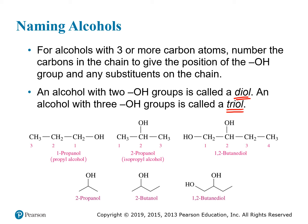Some examples: 1-propanol has a propane chain with the OH group attached to the first carbon — the one closest to the hydroxyl substituent. If the hydroxyl group were on the other side, that carbon would be numbered one instead. For 2-propanol, you still have a three-carbon propane chain, but the OH is attached to the middle carbon. No matter which end you start counting from, the middle carbon is always carbon number two in propane.